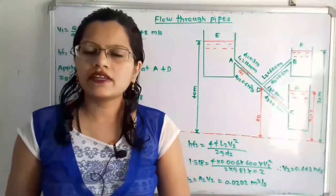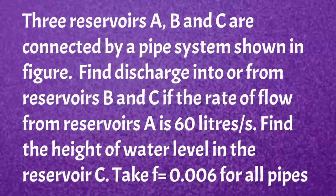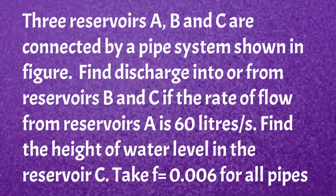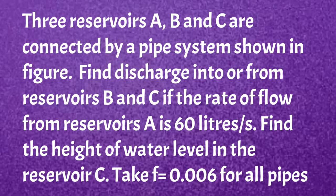First I will read the given problem. Three reservoirs A, B, and C are connected by a pipe system as shown in the figure. Find the discharge into or from reservoir B and C if the rate of flow from reservoir A is 60 liters per second. Find the height of the water level in reservoir C. Take F equal to 0.006 for all pipes.